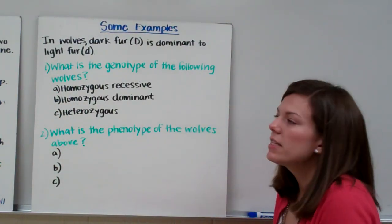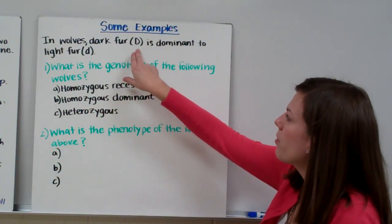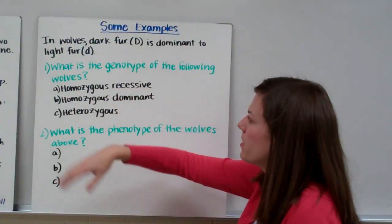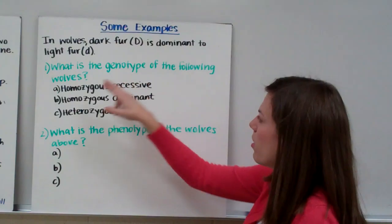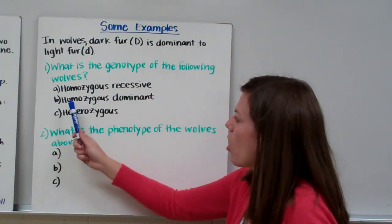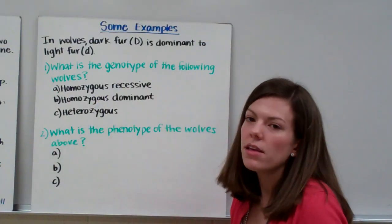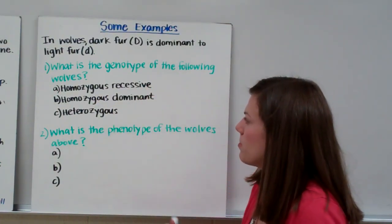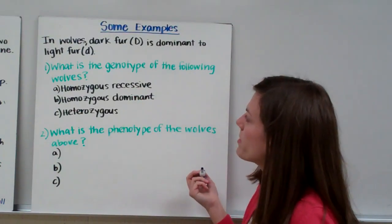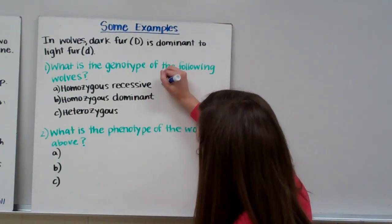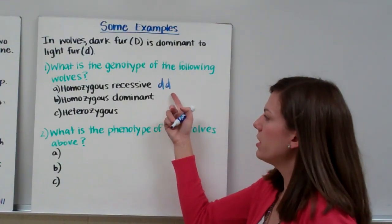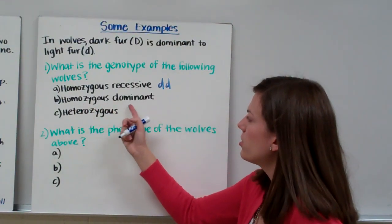Now let's look at some examples. In wolves, dark fur represented by big D is dominant to light fur, little d. What is the genotype of the following wolves? The first one is homozygous recessive. Homozygous means same, and recessive means small letters, so you have two of the same small letters — little d little d. Homozygous dominant means two of the same big letters — big D big D.